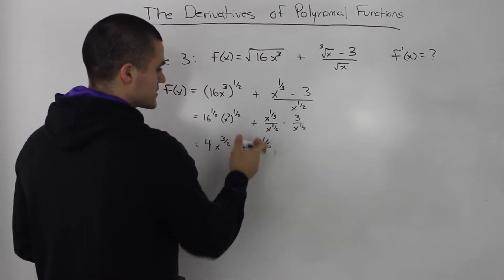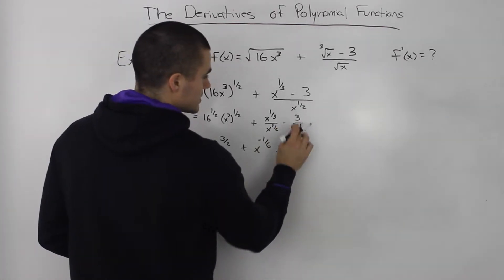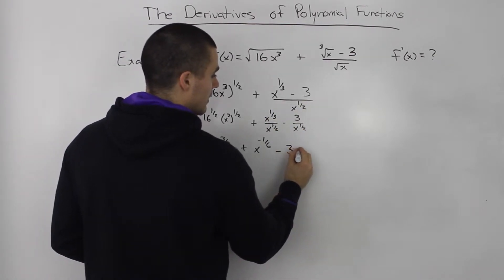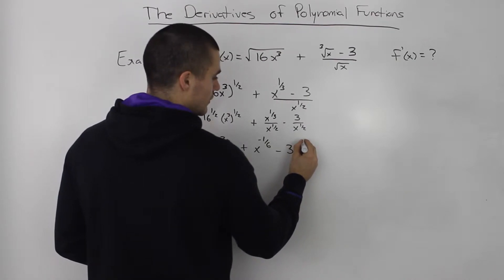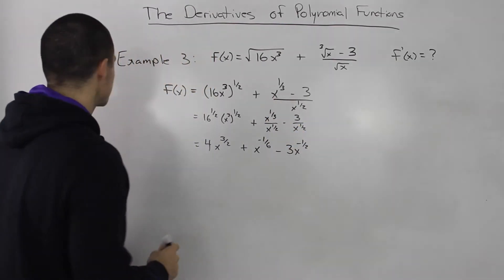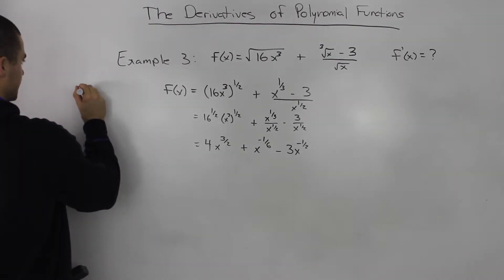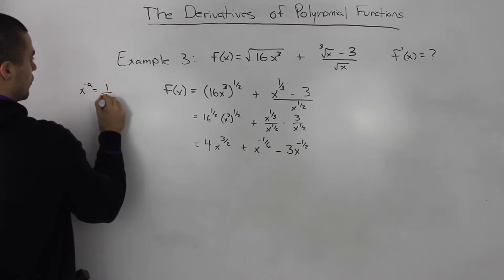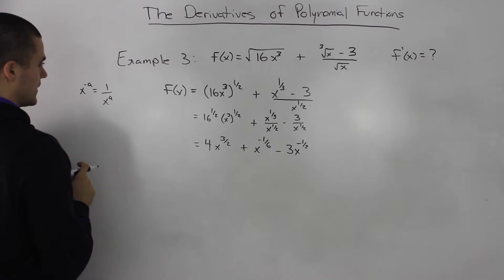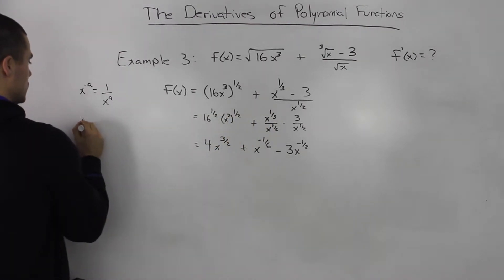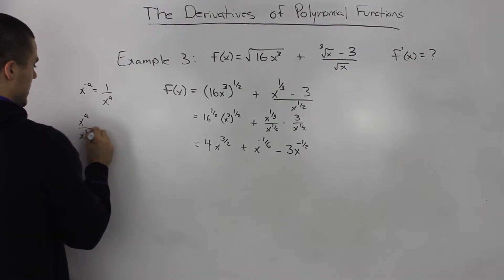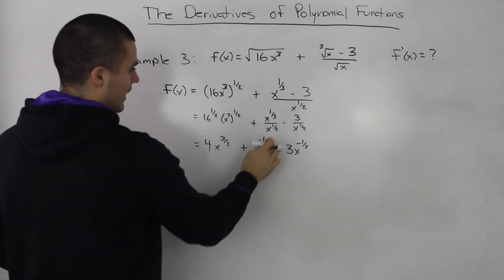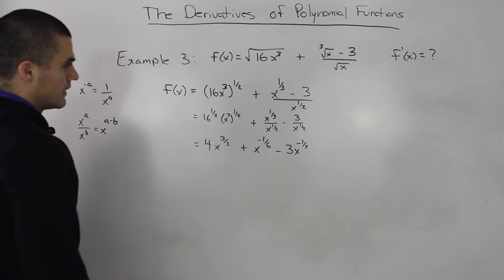So 2 minus 3 gives negative 1, meaning the exponent is negative 1 over 6. For the last term, I'm going to bring x to the power of 1 half from the denominator to the numerator, so it becomes negative 3x to the power of negative 1 half. As a recap, the rule is: x to the power of negative a is the same as 1 over x to the a. And when dividing exponents with the same base, you subtract the exponents.